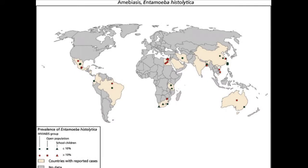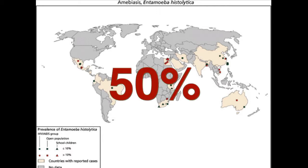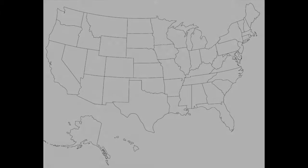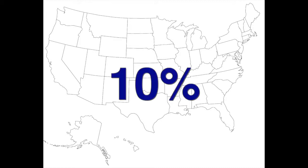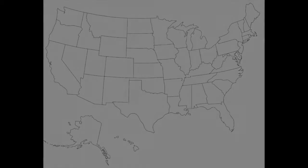The incidence of amoebiasis is higher in developing countries. Entamoeba infection is as high as 50% in parts of Central and South America, Africa, and Asia. In the U.S., disease is more prevalent among those who live in communal settings, as well as travelers to endemic areas. In one study, 10% of individuals returning with diarrhea were found to have amoebiasis.